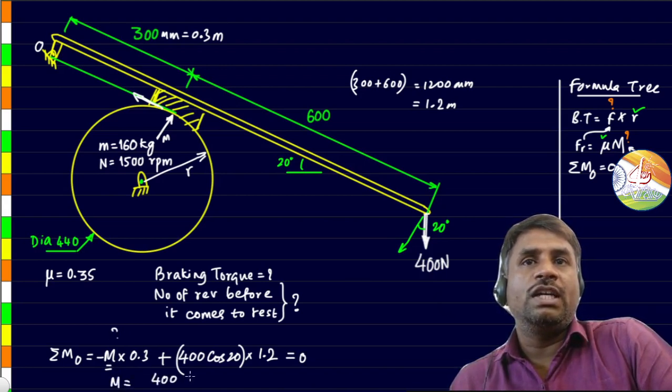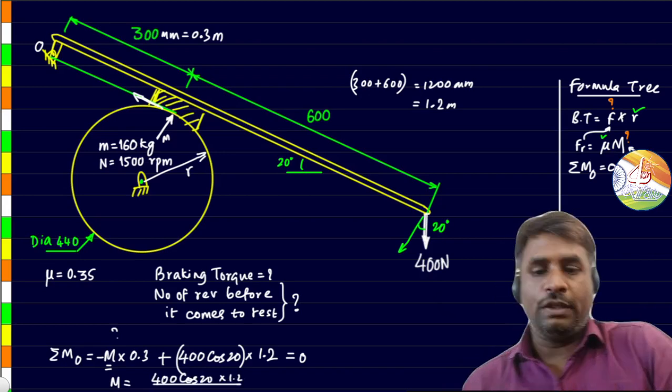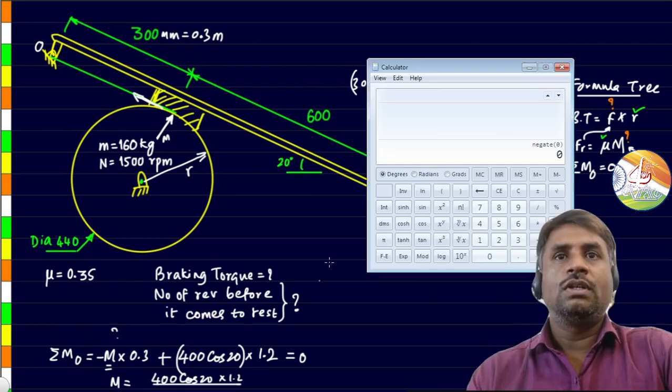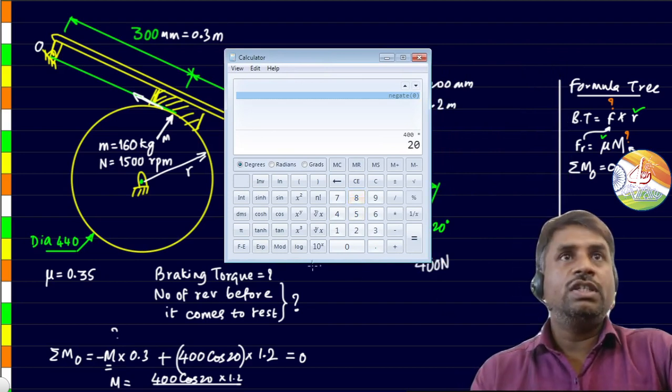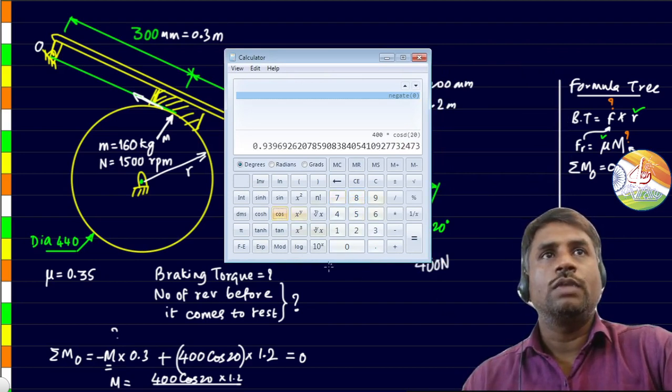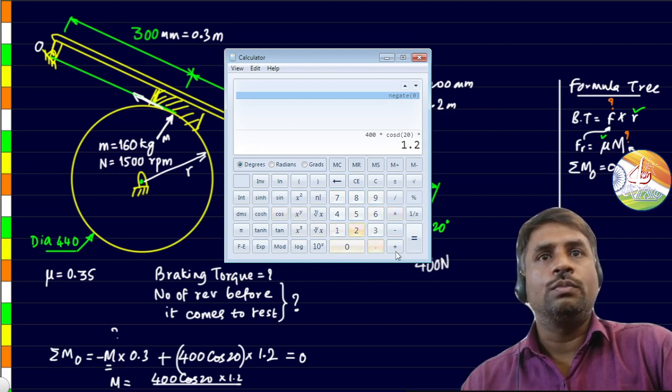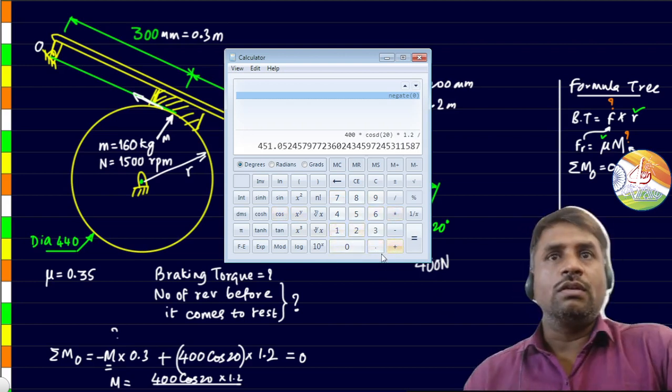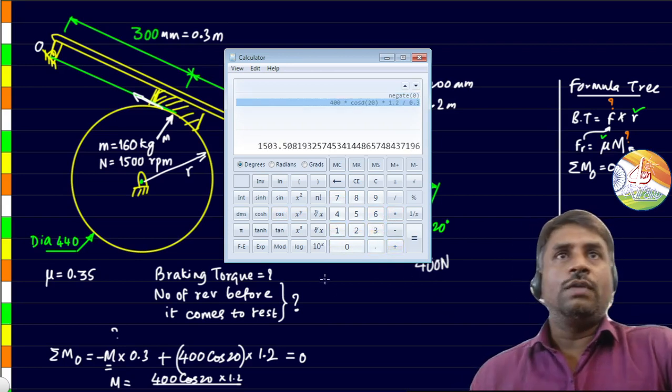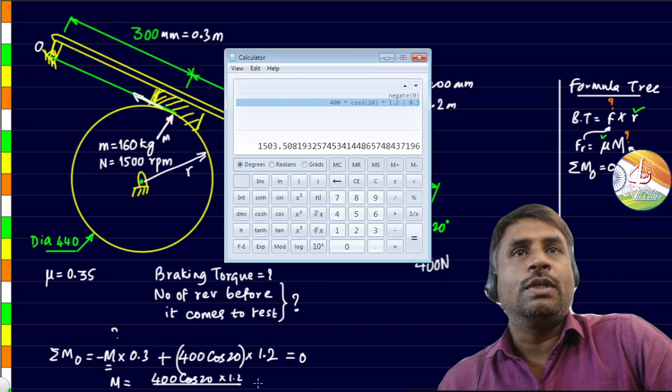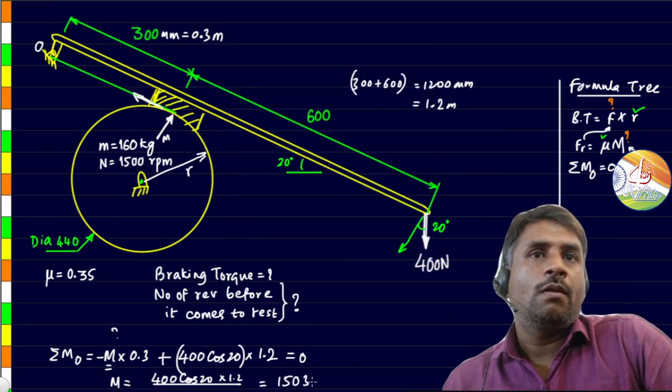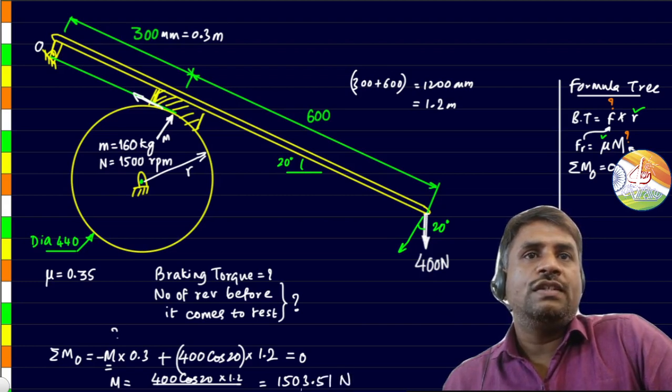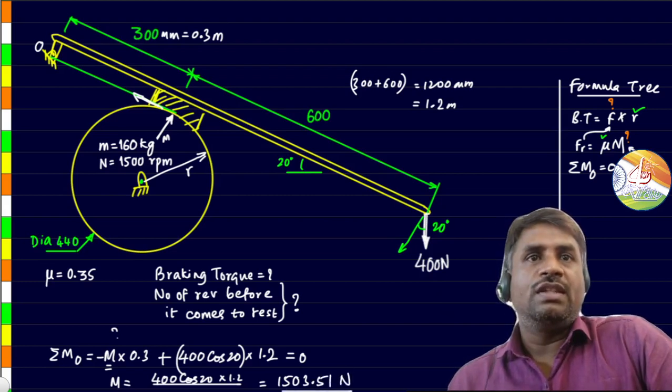Coming to the direction of rotation, it is turning clockwise when we consider about the point, and hence we will take it as positive. This total has to be equated to 0. M is the only unknown. We can just go ahead and find the value of M. That will be 400 times cos 20 into 1.2 divided by 0.3. So we have 1503.51.